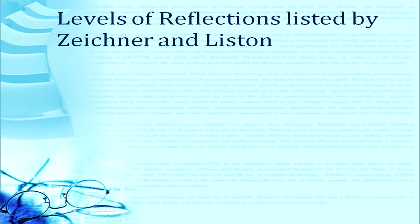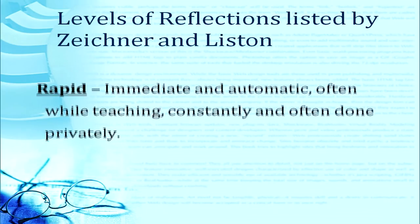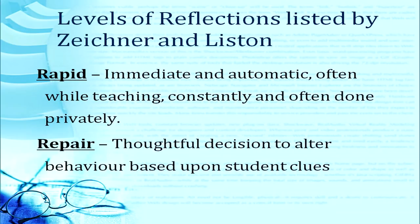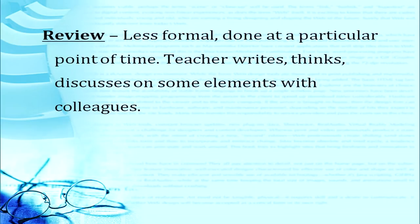The levels of reflection listed by Zeichner and Liston are: first, rapid — immediate and automatic decisions while teaching, often done privately. The teacher constantly changes examples, questions, and strategies so that students learn better. Then comes repair — thoughtful decisions to alter behavior based upon students' cues. Review means it is less formal, done at a particular point in time — what I have done, what was wrong, what was right. The teacher writes, thinks, discusses elements with colleagues so that the next teaching is always better than the previous one.